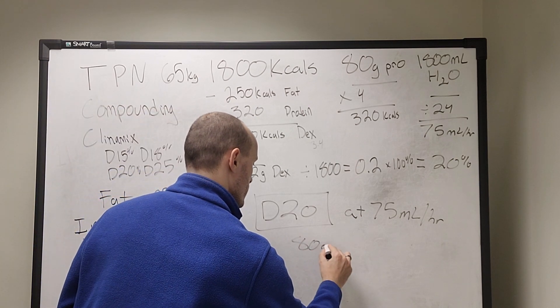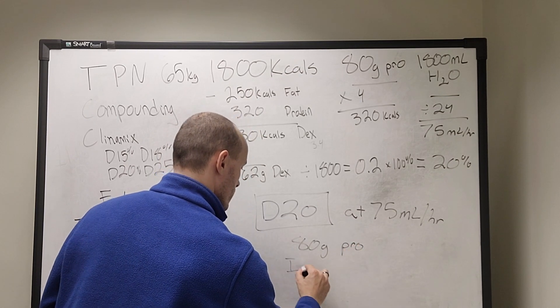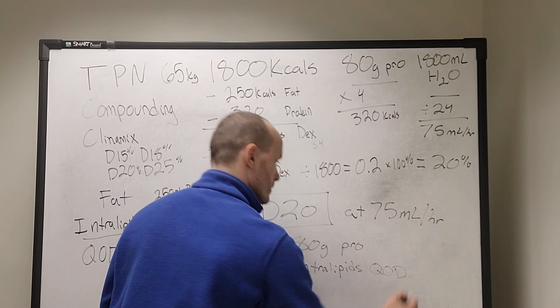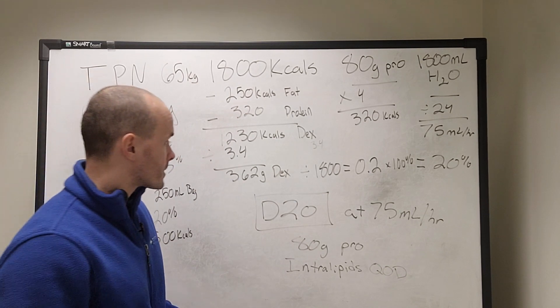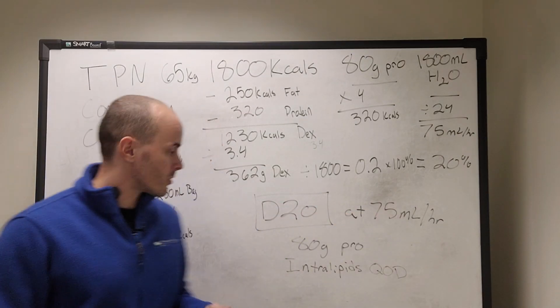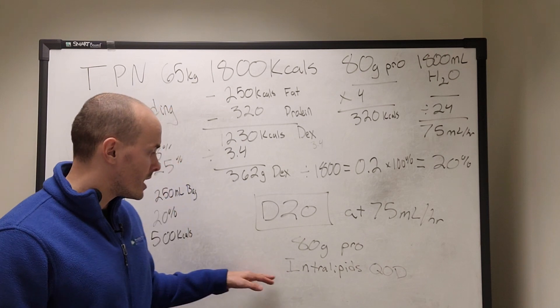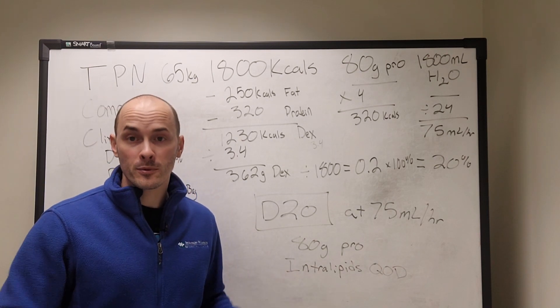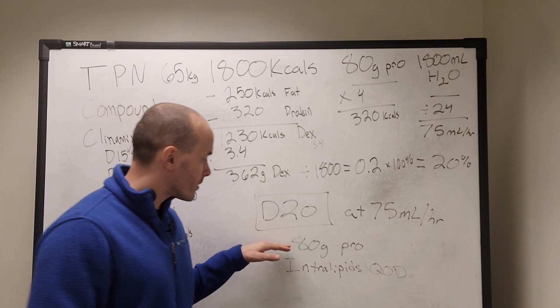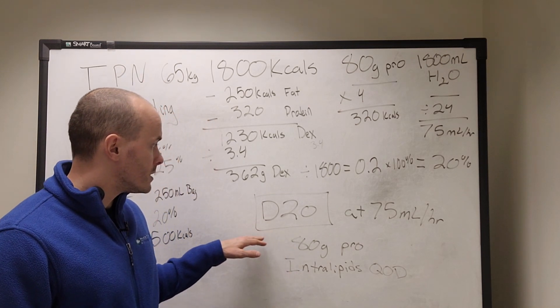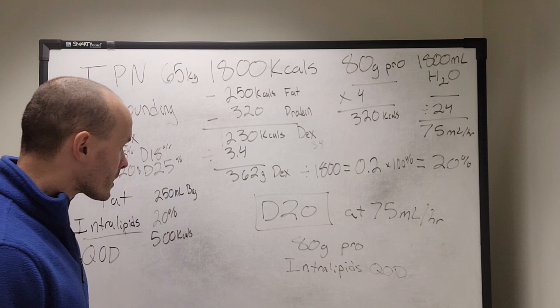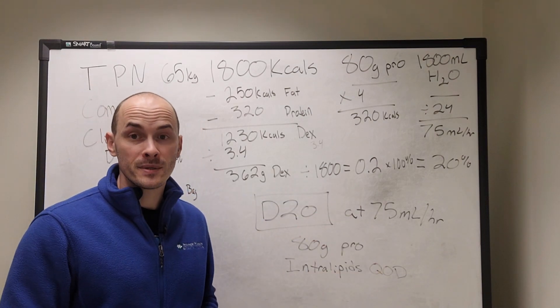So they'll get a D20 at 75 milliliters per hour with 80 grams protein and intralipids every other day. So that's what this would look like. Call your pharmacist up. You say, I want D20 at 75 mils an hour with 80 grams amino acids and intralipids every other day. 20% intralipids every other day. So the pharmacist will take a bag of D20, they'll put in the amino acids, and then they'll hang the lipids separately. And so that's how you do a custom TPN mix.